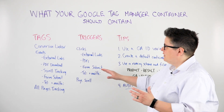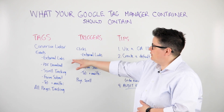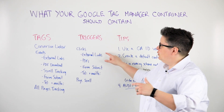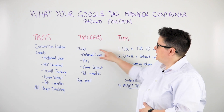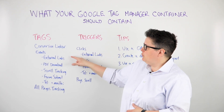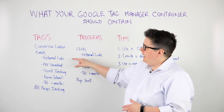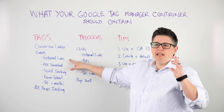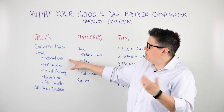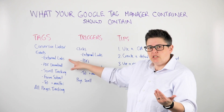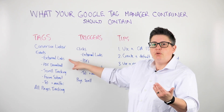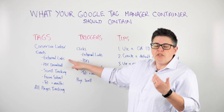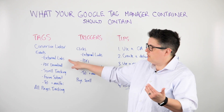Next up are the triggers. I have a tag for external links, then I need a trigger for external links. The trigger says, when somebody clicks an external link, then I want this event to happen. The event is where you structure the category, the action, and the label. The way that we would structure external links: the category is 'external link,' the action is 'click,' and then the label is the actual link that was clicked. You can go through each of these and see where this is happening.